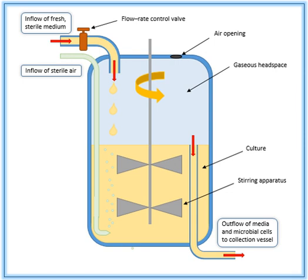Chemostats are frequently used in the industrial manufacturing of ethanol. In this case, several chemostats are used in series, each maintained at decreasing sugar concentrations. The chemostat also serves as an experimental model of continuous cell cultures in the biotechnological industry.